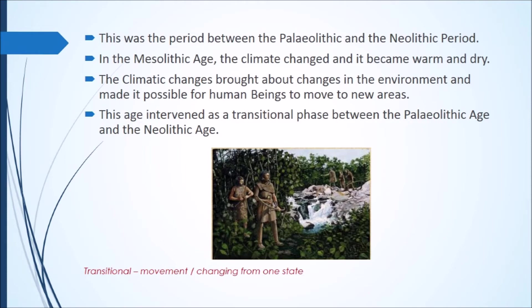In the Mesolithic period, the climate changed and it became warm and dry. Due to these climatic changes, there were changes in the environment as well. As a result, human beings moved from one place to another. This Mesolithic period is also called the transitional phase between the Paleolithic age and Neolithic age — transitional means changing from one state to another.